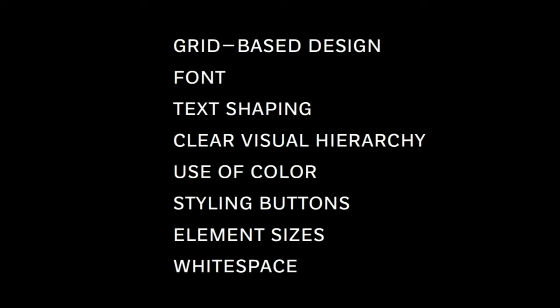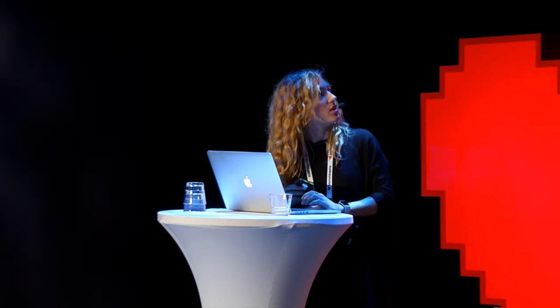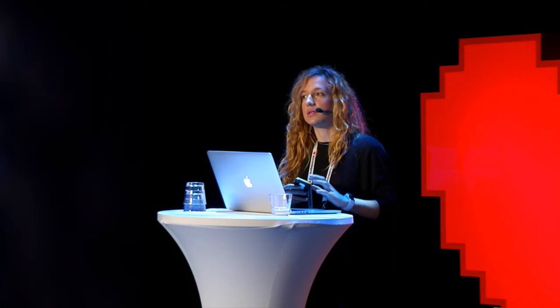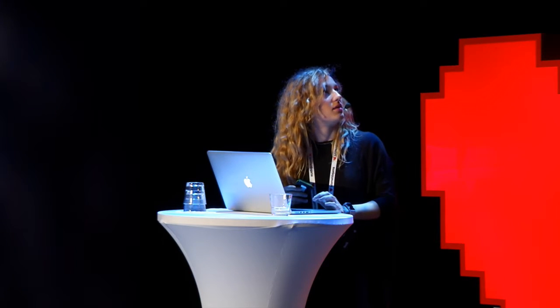So what exactly have we done? By fixing these parameters, we managed to create a new layout for the dashboard and an entirely new system for the dash icons. We made a grid-based design. We have chosen a new font. We have shaped text in a different way. We have added clear visual hierarchy. We have used a limited amount of colors. We have added a system for styling the buttons. We have also added a system for sizing elements that belong in the same category, and we have added a lot of white space to make the design more breathable.